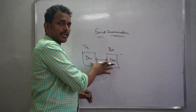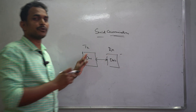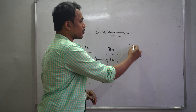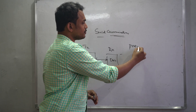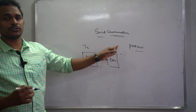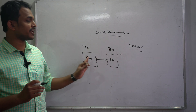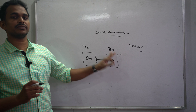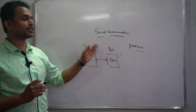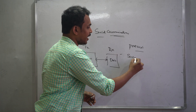Whenever you want to establish serial or parallel communication between two devices, you have to follow particular protocols. These protocols are very important for your communication, defining how data will transfer from transmitter to receiver or receiver to transmitter. Data transfer happens in two types: serial and parallel.